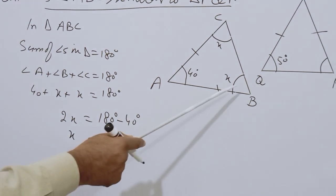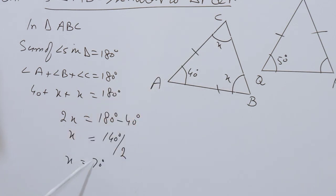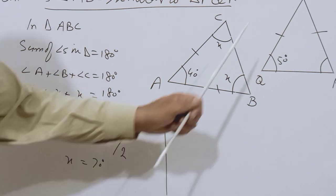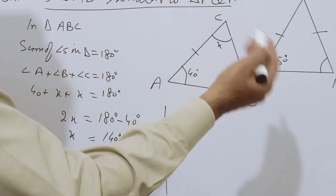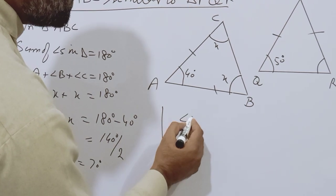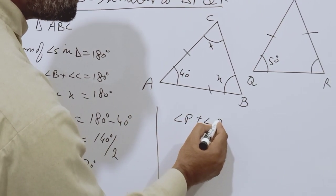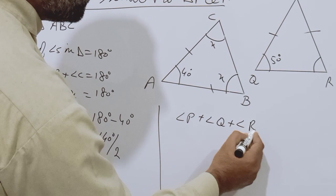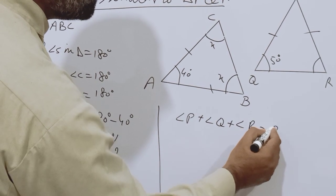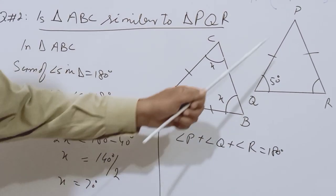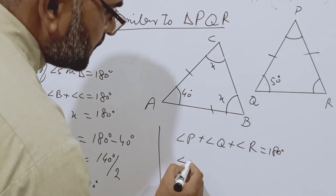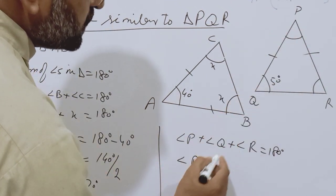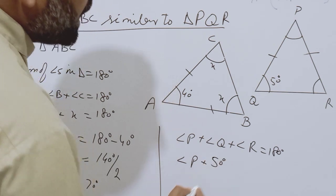So students, Angle B and Angle C are both equal to 70 degrees. Now I will discuss Triangle PQR, in which the sum of angles in a triangle is again 180 degrees. So Angle P plus Angle Q plus Angle R equals 180 degrees. In place of Angle P we write Angle P as it is, plus Angle Q is 50 degrees.